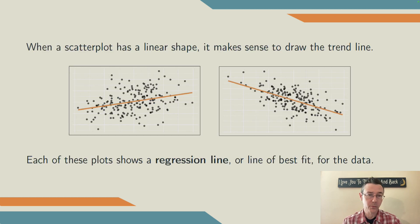We're in a situation where we have two quantitative variables, typically visualized with a scatterplot, and those two variables have a generally linear trend. So it makes sense to draw in lines of best fit like I've done here. We call those lines of best fit regression lines.